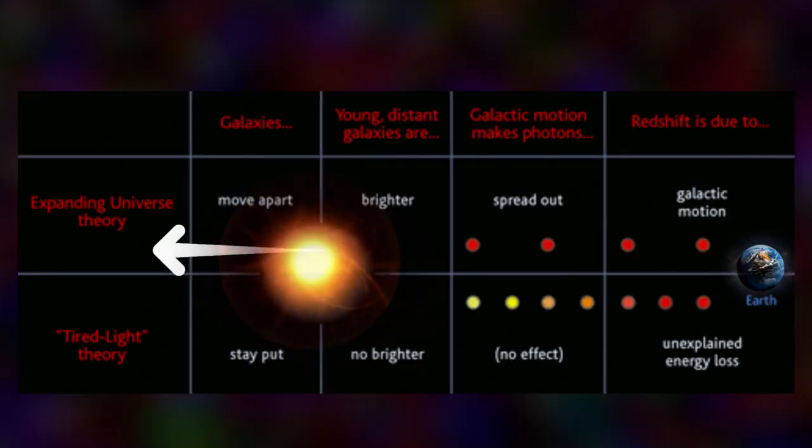Here's where Fritz Zwicky's tired light theory comes into play. According to this proposition, the red shift we observe may not solely result from galaxies moving away from us. Rather, it could be a consequence of light gradually losing energy during its extensive journey across the universe.